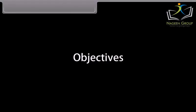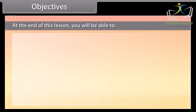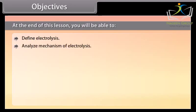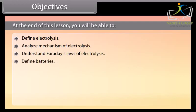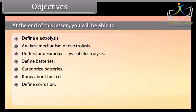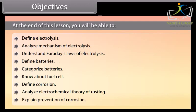Objectives. At the end of this lesson, you will be able to: Define electrolysis, Analyze mechanism of electrolysis, Understand Faraday's laws of electrolysis, Define batteries, Categorize batteries, Know about fuel cell, Define corrosion, Analyze electrochemical theory of rusting, And Explain prevention of corrosion.